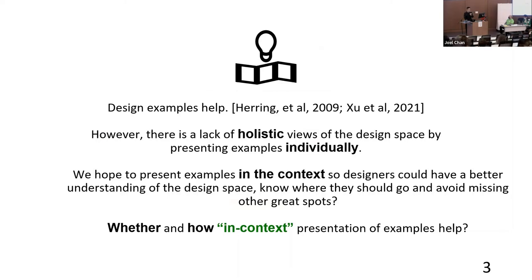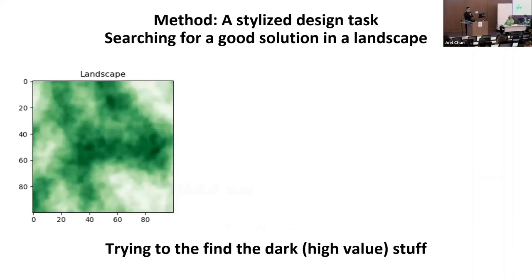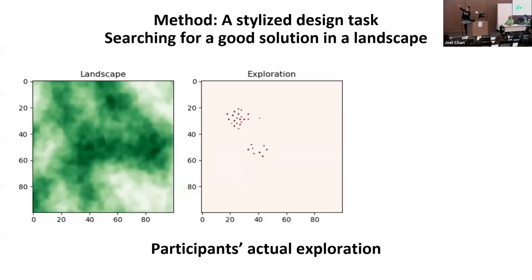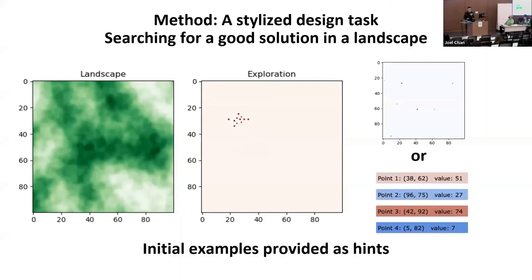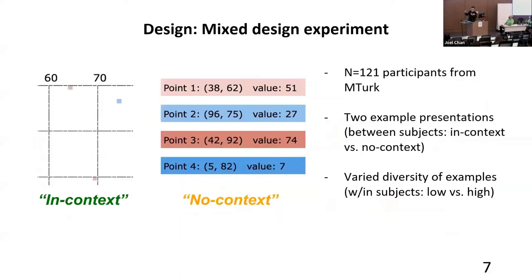We want to answer whether and how in-context presentations of examples could help. If we collapse the high-dimensional reward space into a 2D 100-by-100 grid, there are bad solutions and good solutions — darker colors represent high-value areas. The task is to find those dark high-value areas. Participants create random pixel placements to explore. To help them, we present examples either in the grid (in-context presentation) or in a list (non-context presentation).